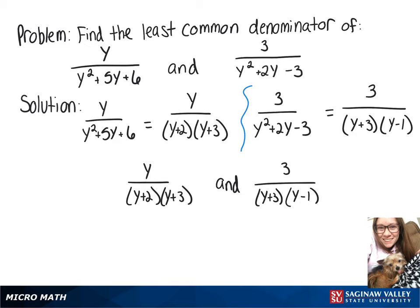So our least common denominator, we're going to take whatever factor those denominators have in common, which is y plus 3 in this case, and then we'll multiply it by the other factors. So we have y plus 2 on the left and y minus 1 on the right. So our least common denominator is y plus 3 times y plus 2 times y minus 1.